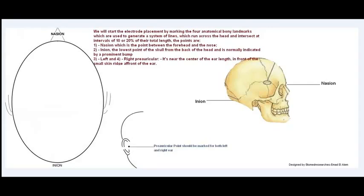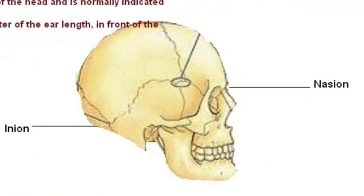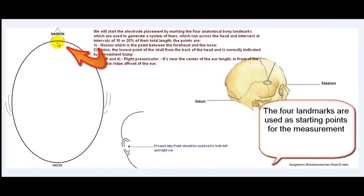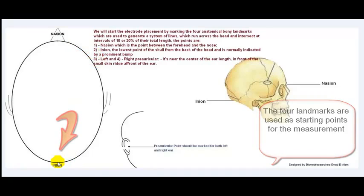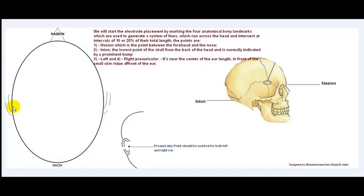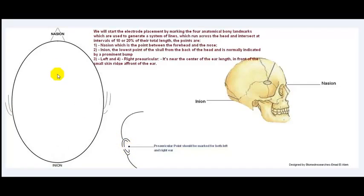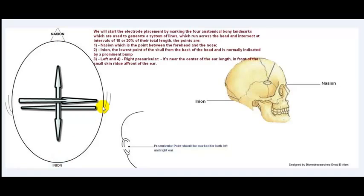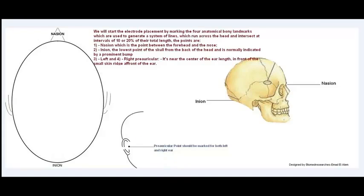We will start the electrode placement by marking the four anatomical bony landmarks. These are landmarks where we will not connect electrodes, but we will use them as a starting point for the measurements. The four landmarks are: the nasion, which is the point between the forehead and the nose; the inion, which is the lowest point of the skull from the back of the head, normally indicated by a prominent bump; and the left and right preauricular areas, located near the center of the ear length in front of the small skin ridge in front of the ear.